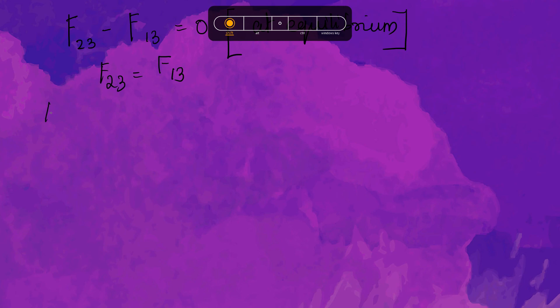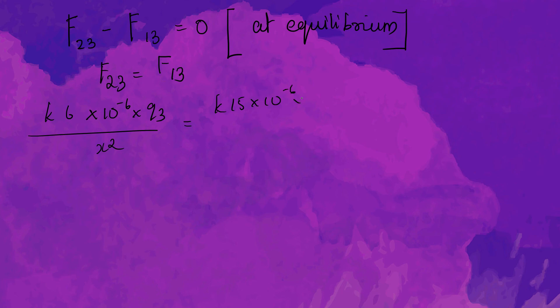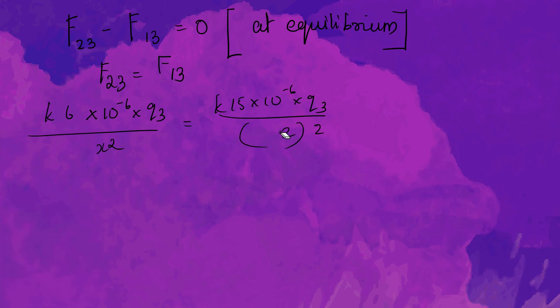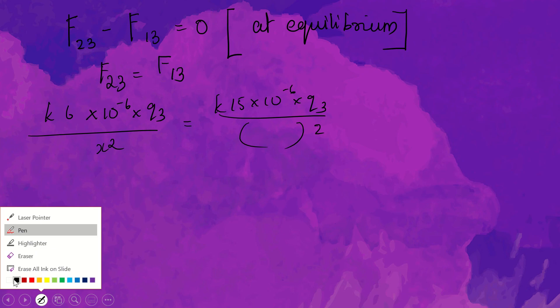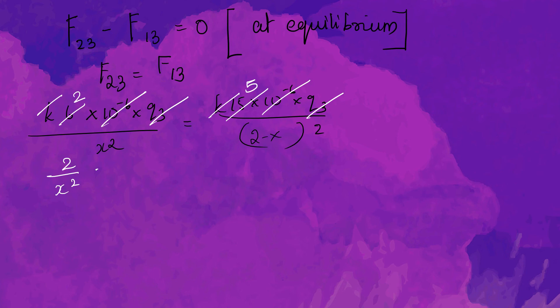Substituting: k × 6 × 10⁻⁶ × q3 divided by x squared, minus k × 15 × 10⁻⁶ × q3 divided by (2 minus x) squared equals zero. Here k, 10⁻⁶, and q3 all cancel out. Simplifying the coefficients — 6 and 15 reduce to 2 and 5 — giving us 2 divided by x squared equals 5 divided by (2 minus x) squared.